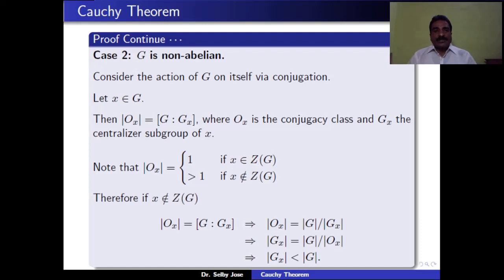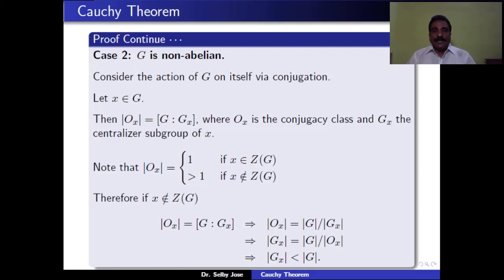In this case, consider the action of G on itself via conjugation. For one element X in G, the number of elements in the orbit of X equals the index of C_G(X) in G, where the orbit is the conjugacy class and C_G(X) is the centralizer subgroup of X. If X is in the center of G, then the orbit contains only one element, so |O(X)| = 1. If X is not in the center of G, then |O(X)| > 1.